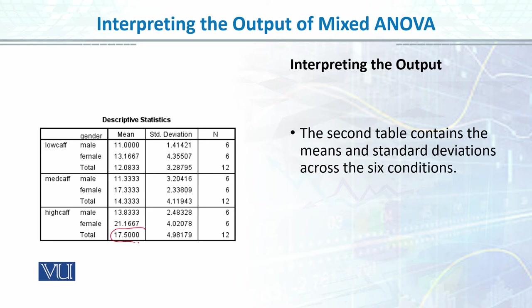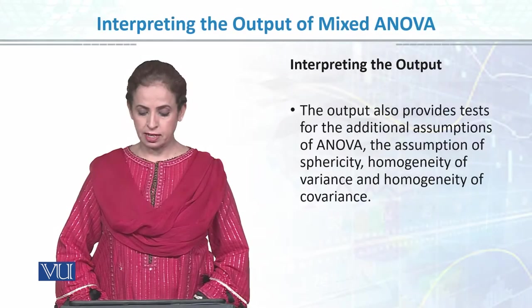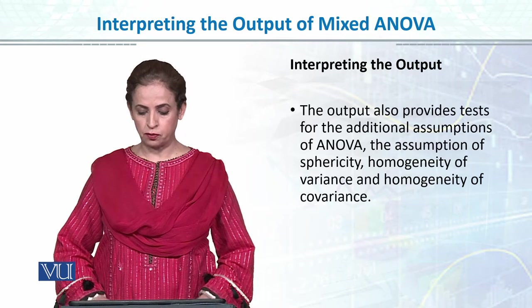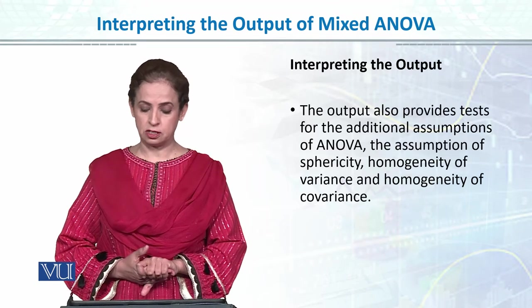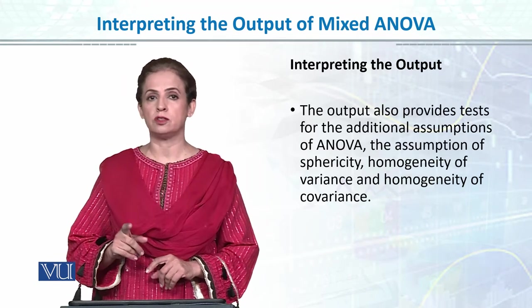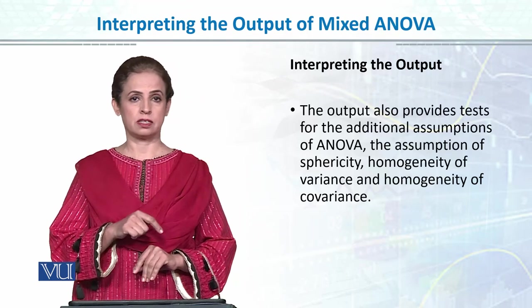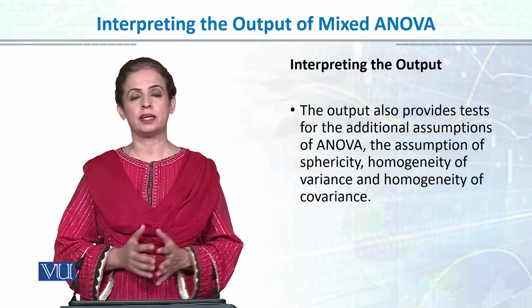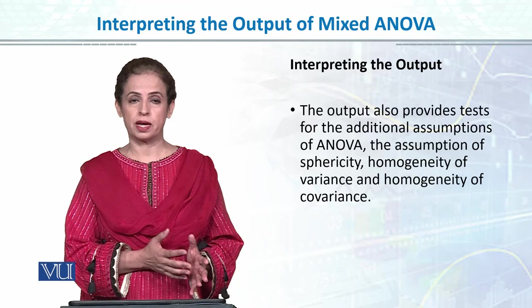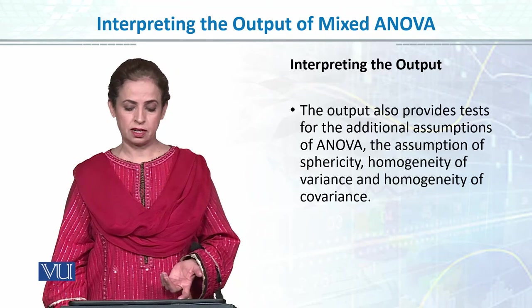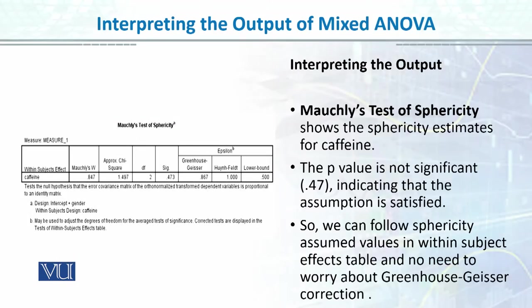Our general idea is to examine the mean and standard deviation, the sample size, and the amount of variation. We talked about homogeneity of variance — now we have three types of variance: independent group variance, within-group variance, and repeated measures variance.